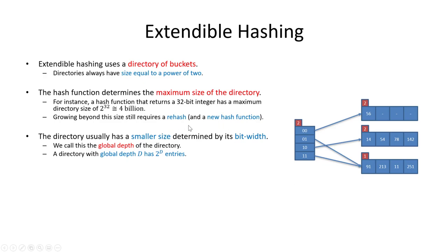As the directory grows it's usually smaller than its maximum size, determined by some bit width smaller than 32. The value indicating how wide the directory is is called the global depth. A directory with global depth d has 2^d entries. In our case the global depth is two, so we have four entries. The maximum depth in our example will be six bits.